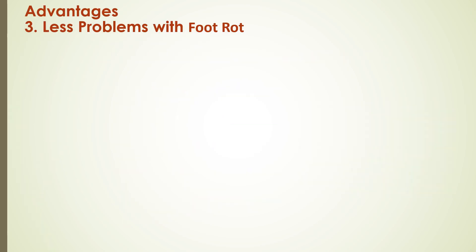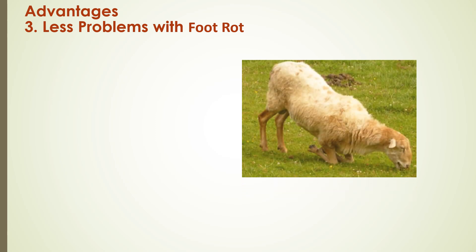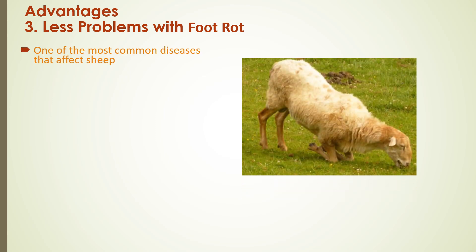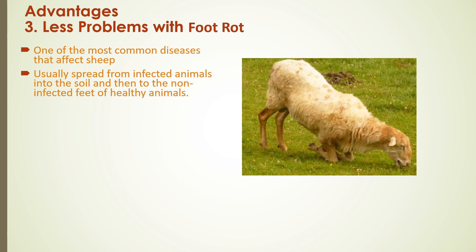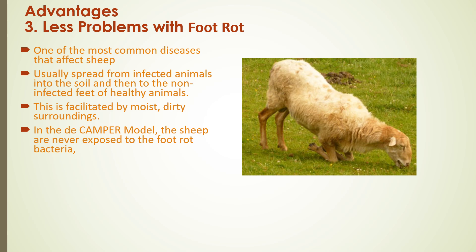The third advantage is fewer problems with foot rot, which is one of the most common diseases that affects sheep. It is usually spread from infected animals into the soil and then to the feet of healthy animals. This process is facilitated by moist, dirty surroundings often found in sheep pens with clay or concrete floors or in pastures during the wet season. In the DeCampo model, the sheep are kept on raised slotted floors, which allows their feet to be kept dry at all times. And since they are never exposed to foot rot bacteria, they live a life free of foot rot.